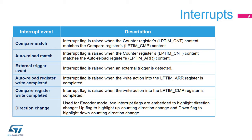The low-power timer peripheral features seven interrupt sources. The compare-match interrupt is raised once the counter register LP-TIM-CNT matches or is greater than the compare register LP-TIM-CMP content. The auto-reload match interrupt is raised when the counter register's content matches the auto-reload register's content. The external-trigger event interrupt is raised when a valid external trigger is detected. The auto-reload register-write completed and compare-register-write completed interrupts are raised when the transfer of LP-TIM-ARR and LP-TIM-CMP register content is completed from the APB interface logic into the peripheral's core logic, which are in two different clock domains. These interrupts are useful in mitigating the overhead of polling register write status when the peripheral core clock is too slow compared to the APB interface clock.